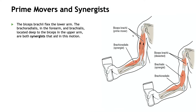As an example of prime movers and synergists: the biceps brachii flexes the lower arm, and then the brachioradialis in the forearm and the brachialis located deep to the biceps in the upper arm are both synergists that aid in that motion.